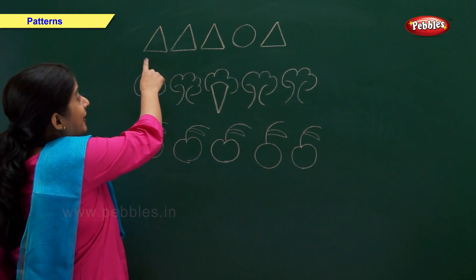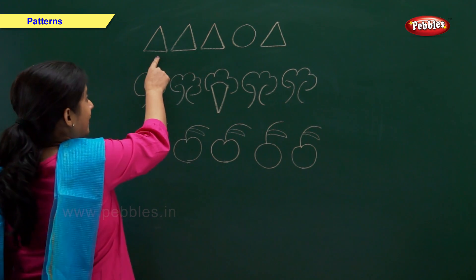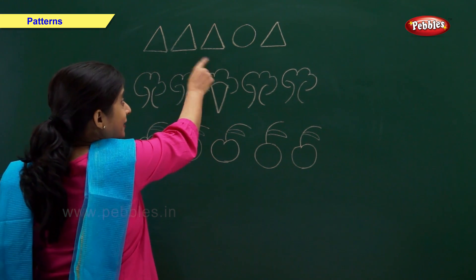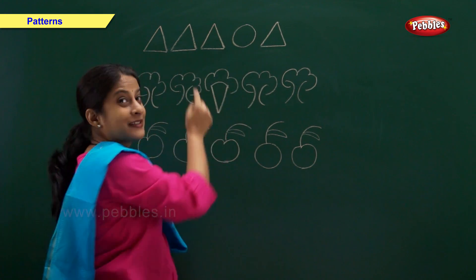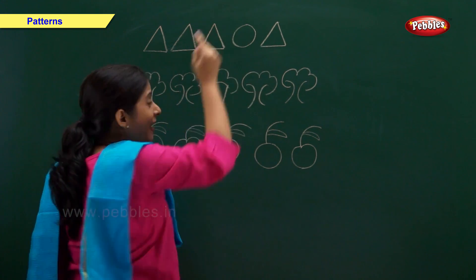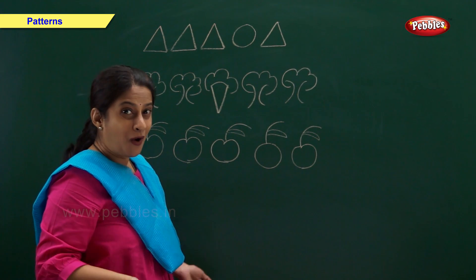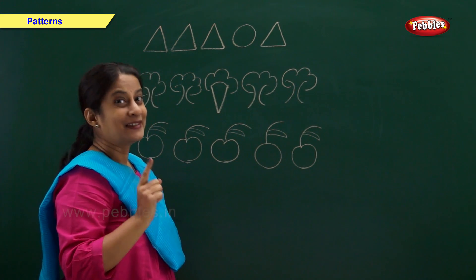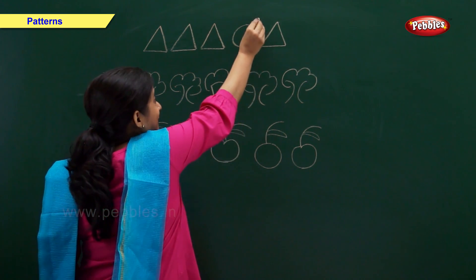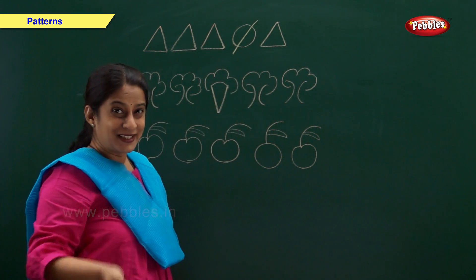In this group we have triangle, triangle, triangle, triangle, circle and triangle. So which figure is odd? The circle is odd. So let's cross the circle.